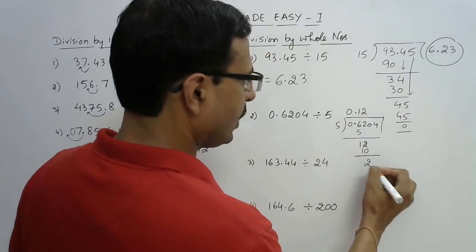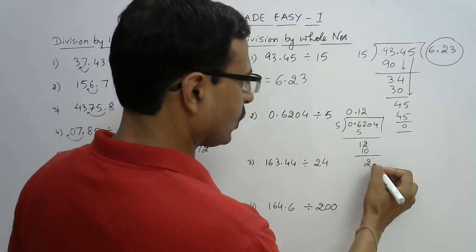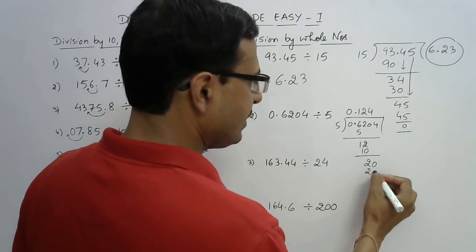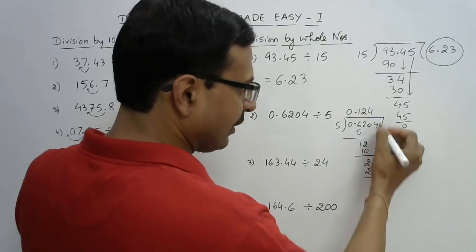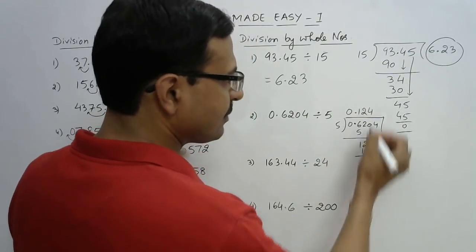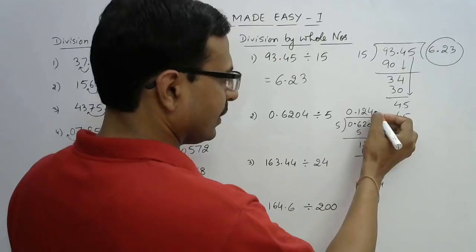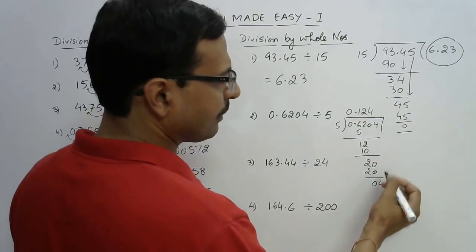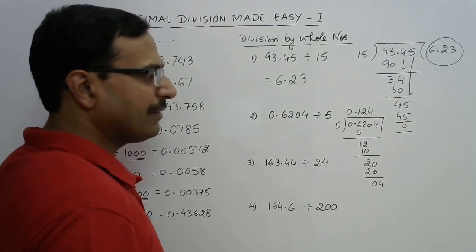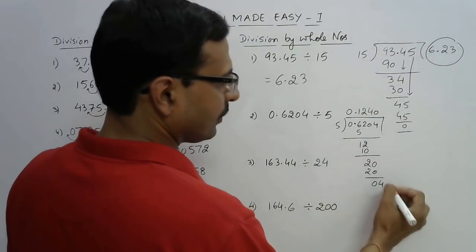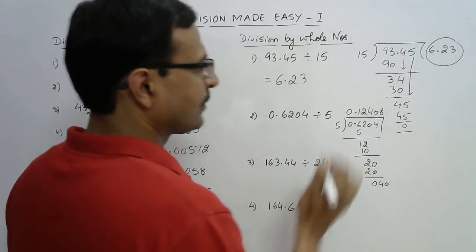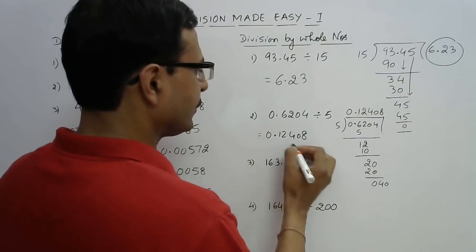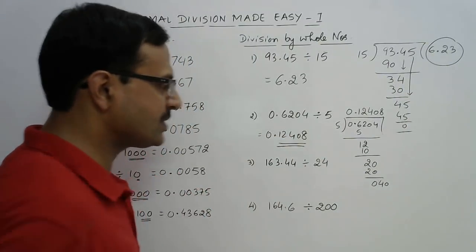Continuing: we get 2, then 0 comes down giving 20, then 4, and since it is not divisible evenly we put a 0 and carry on. The final answer for 0.6204 ÷ 5 is 0.12408.